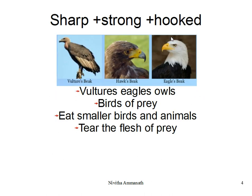Sharp, strong, and hooked beaks are found in vultures, eagles, and owls. They are birds of prey. They eat smaller birds and animals and tear the flesh of their prey. Strong, sharp, and hooked beaks help to tear the flesh of the prey in flesh-eating birds. An eagle can tear off the skin of a rat because its beak is hooked and strong.